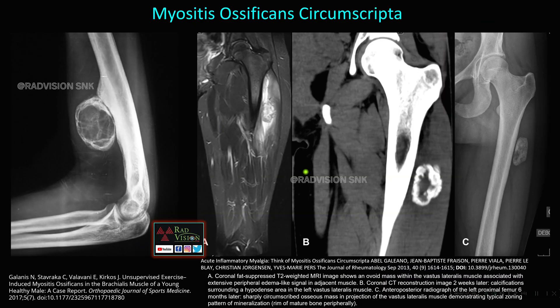Here you can see a lucent lesion with a peripheral eccentric rim of calcification and central lucency, separated by a cleft from the bone — this is typical myositis ossificans circumscripta. Here also you can see a lesion in the vastus lateralis with adjacent edema; after two weeks a peripheral eccentric rim of calcification with central lucency appears, and after six weeks there is a zone of mineralization with mature bone formation. Typical location, peripheral calcification, central lucency, separation from bone by a cleft, and prior trauma history should suggest myositis ossificans rather than tumor.